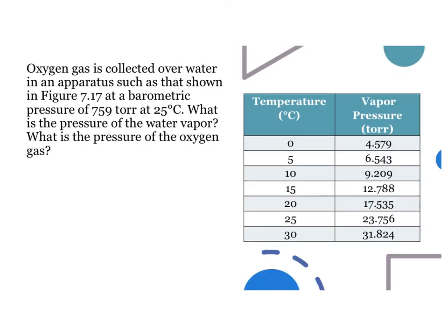Oxygen gas is collected over water in an apparatus such as that shown in figure 7.17 at a barometric pressure of 759 torr at 25 degrees Celsius. What is the pressure of the water vapor? What is the pressure of the oxygen gas?